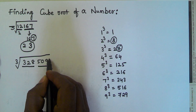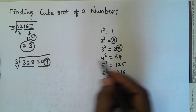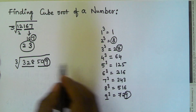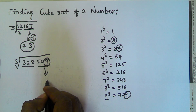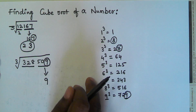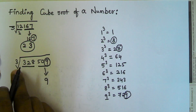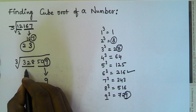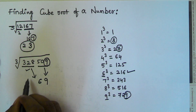We take the rightmost part 509. The last digit is 9, and 9 cube ends with 9, so the corresponding digit is 9. Now for the left part 328, the maximum cube value we can subtract from 328 is 216, which is 6 cube (since 7 cube is 343, which is bigger than 328). So the corresponding digit is 6. The cube root of 328509 is 69.